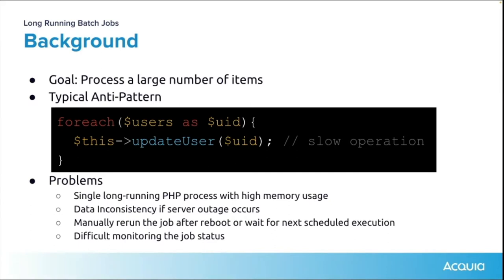The typical anti-pattern — and I hope you know a little about programming — is that you'd have an array called users, fetch that from a previous call, iterate through it, and call a method like update_user for each one. That method might take a second to process, which seems fast for one or two users. But with 10,000 or 20,000 users, even at half a second each, it adds up to 10,000 seconds — roughly two and a half hours — which is a really long job in computer terms.